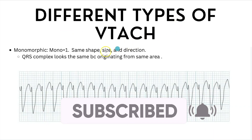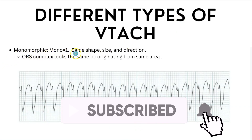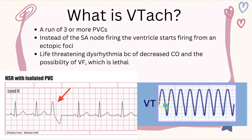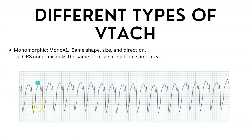There are different types of ventricular tachycardia. Monomorphic — mono equals one — it's the same shape, size, and direction. There's only one troublemaker in the heart firing the impulse, and because there's just one, all of the waves look the same. VTAC looks like the letter V or like a mountain — that's how you remember the rhythm. It has a wide QRS complex. The QRS complex looks the same because it's originating from the same area.